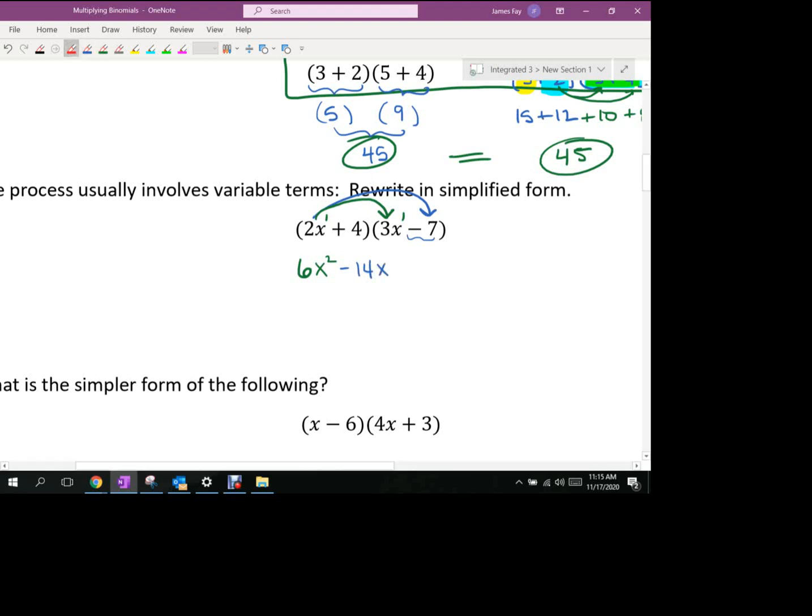So that was distributing the 2x to the second set of parentheses. Now we're going to take the 4 and multiply it by the 3x. What's 4 times 3x? 12x. And then the last one would be 4 times negative 7 gives you negative 28. There's no x's there. So it's going to be negative 28.